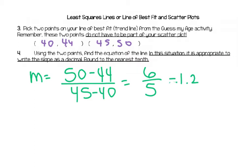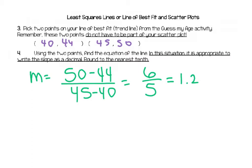We all should have some similarities: everybody should have a positive slope. If you have a negative slope, go back and check because your line of best fit was going up. We should all have something around one — maybe 0.9, 1.1, 1.3, or 0.8. You shouldn't have something like four; that's way too steep.